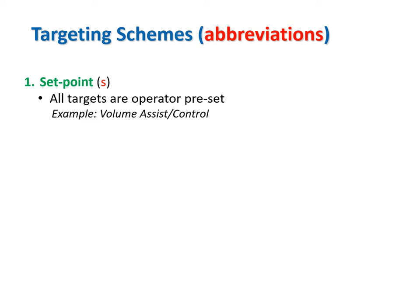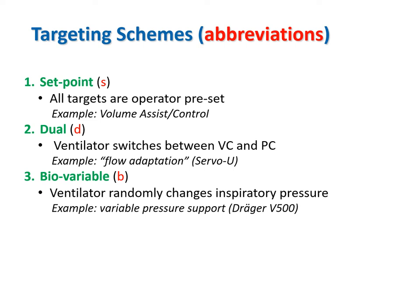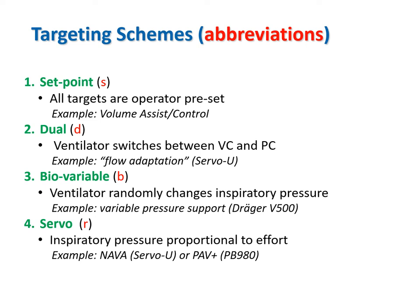We will now review some brief definitions of targeting schemes—you will have to memorize these definitions to fully understand and use the taxonomy. Set point targeting, abbreviated with a lowercase s, means that all targets are operator preset. Dual targeting means the ventilator can automatically switch between volume control and pressure control within a single breath. Bio-variable targeting means the ventilator randomly changes the inspiratory pressure, and hence tidal volume, to mimic normal breathing. Servo targeting means that inspiratory pressure is automatically adjusted to be proportional to inspiratory effort—in effect, PVENT is used to amplify PMUS, similar to the way power steering works in a car.